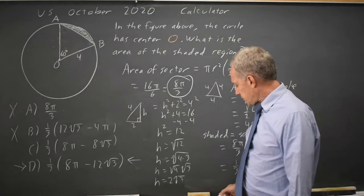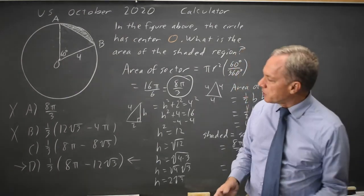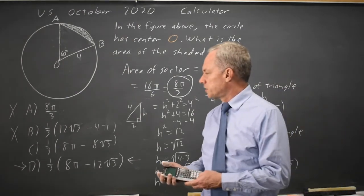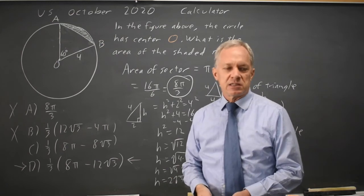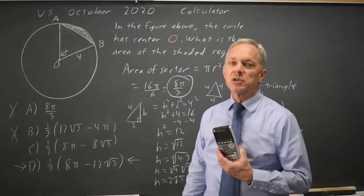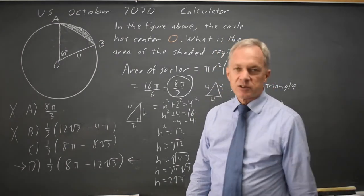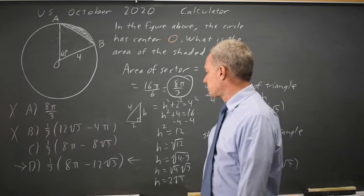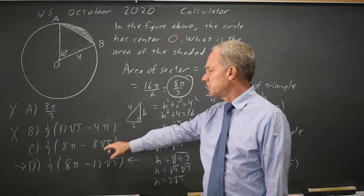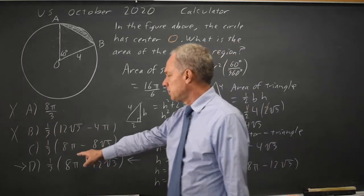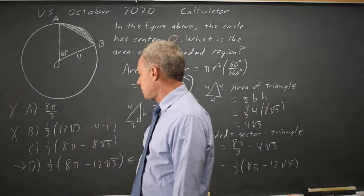Since it is a calculator section, you could find the numerical values of C and D and see if one of them seems more reasonable. That may not be the best use of your time if you are under time pressure — just guess 50-50 once you know it has to be 8π minus something.